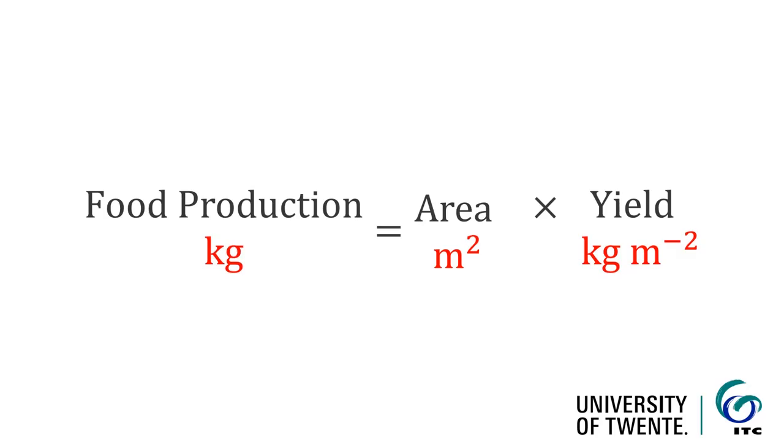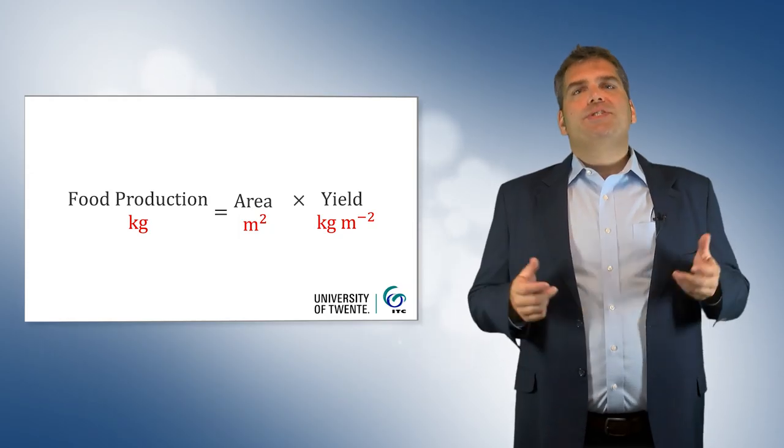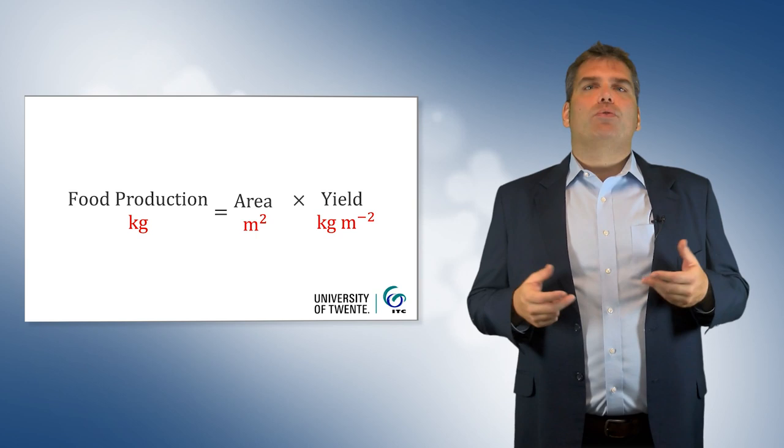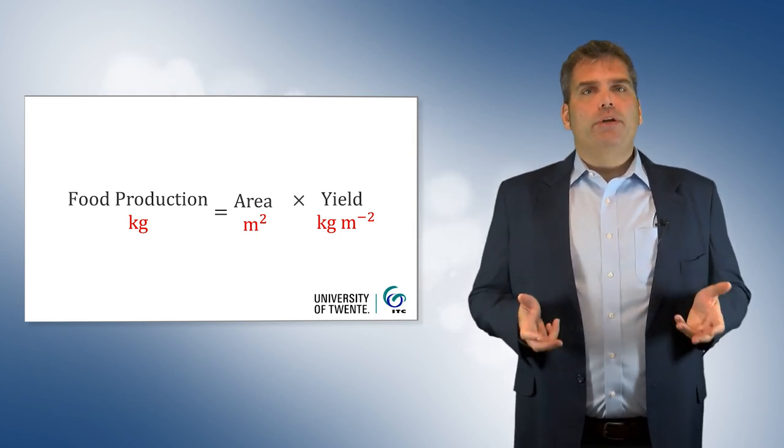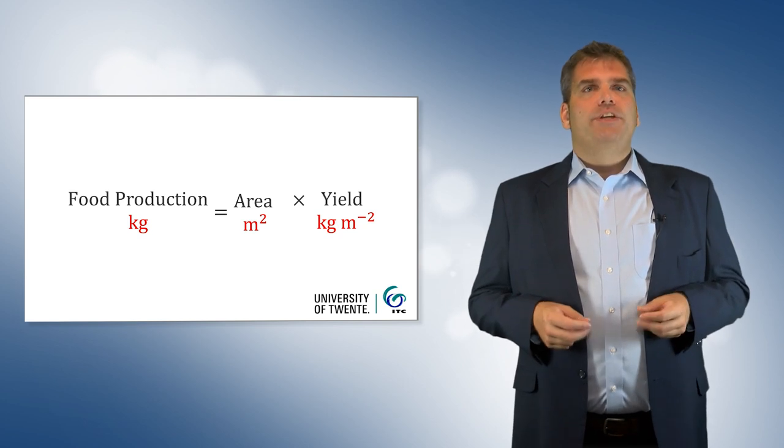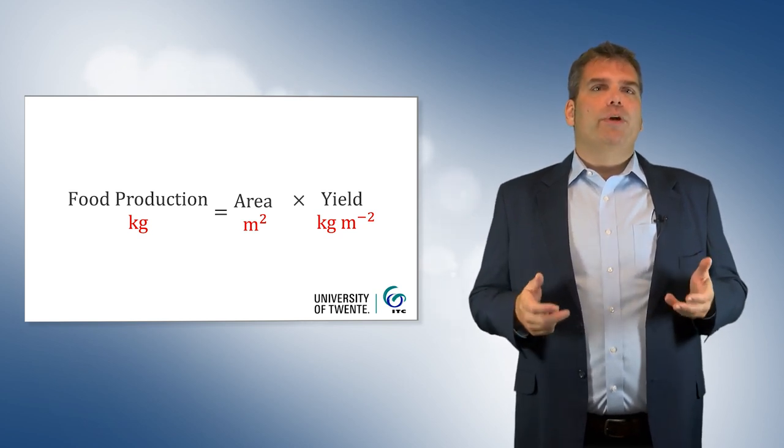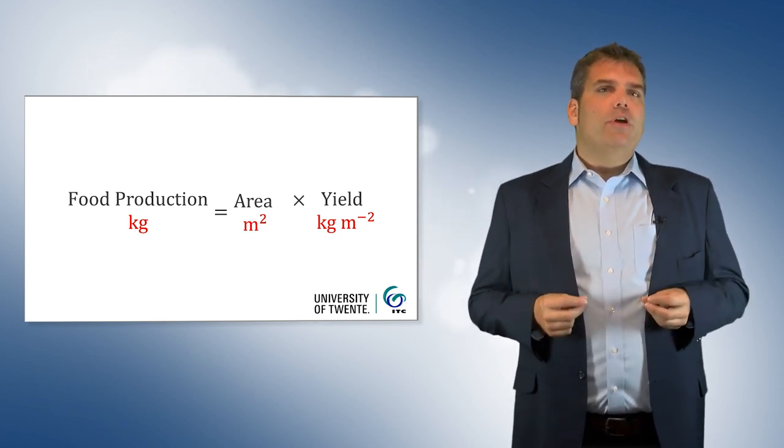Food production is defined as the harvested crop area multiplied by the harvested crop yield. It is typically measured in kilograms or metric tons. Crop area is measured in square meters or hectares. It is simply defined as the area over which a crop is harvested.